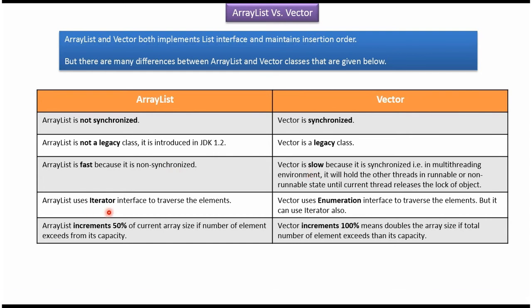ArrayList uses the Iterator interface to traverse the elements. In the case of Vector, it uses the Enumeration interface to traverse the elements, but it can also use Iterator.